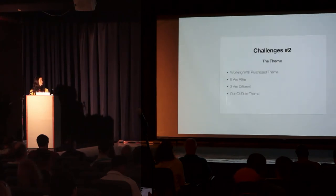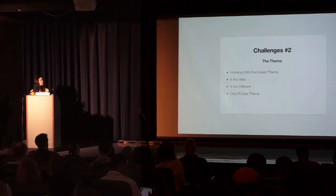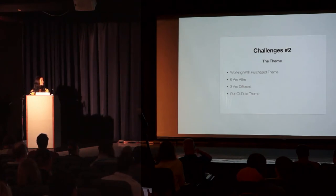Challenge number two is the theme. We had to work with the theme provided to us — the IT department wasn't involved in purchasing it. It was outdated; we used WordPress version 3.3.2 but had a lot of warnings and errors, requiring extensive customization. It also wasn't built for WordPress multisite, so we had to adjust for that. And as shown in the screenshots, six blogs were similar but three were very different, requiring a lot of additional adjustments.